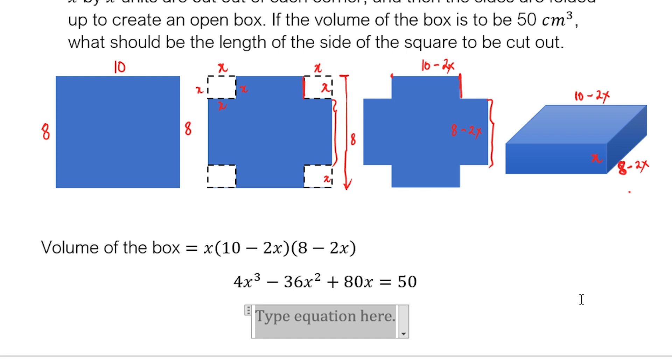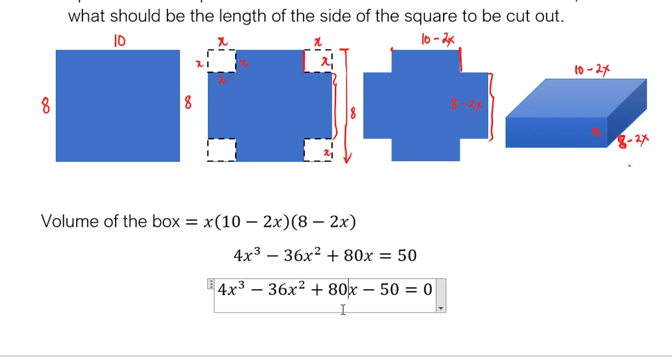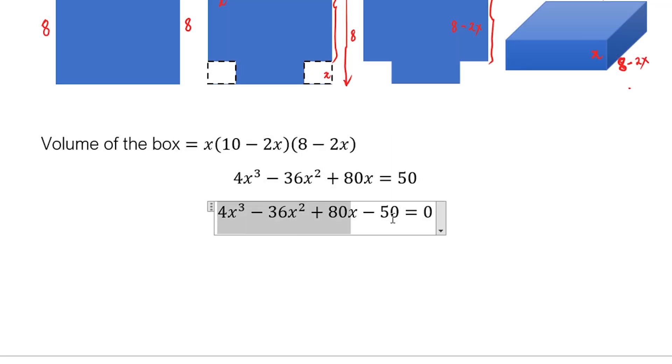And this is equivalent to 50. Let's simplify. Let's bring everything to the left side. We have 4x³ minus 36x² plus 80x minus 50 is equal to 0. Like earlier, all we have to do is to compute for the value of x that will satisfy this equation.